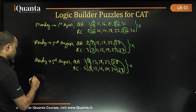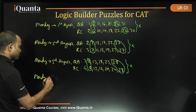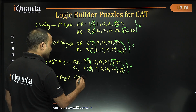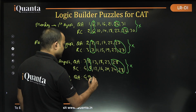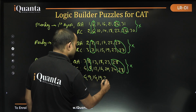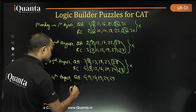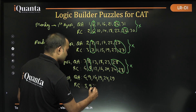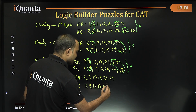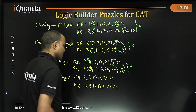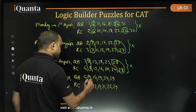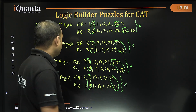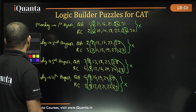Now let's check if Monday is on 4th of August. Then QA will be taught on: 4th, 9th, 14th, 19th, 24th, and 29th. RC will be taught starting with the 1st Tuesday on 5th, then: 5th, 9th, 13th, 17th, 21st, 25th, and 29th. Again, there will be 2 common days, so this is also not possible. So Monday cannot fall on the 1st, 2nd, 3rd, or 4th.